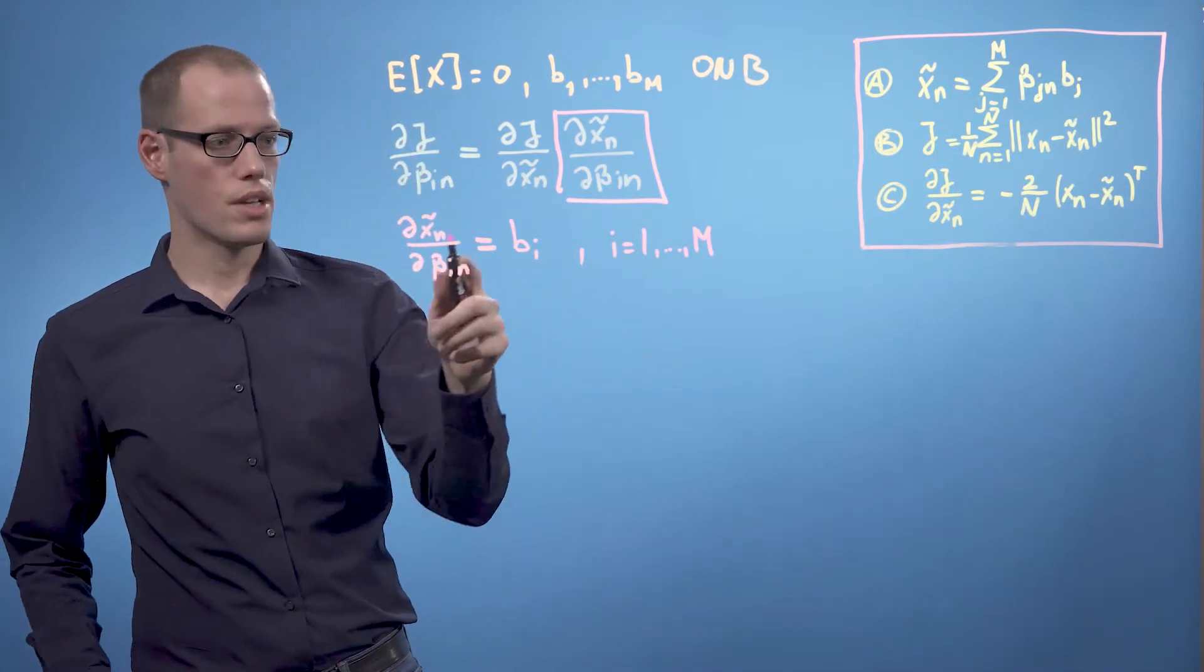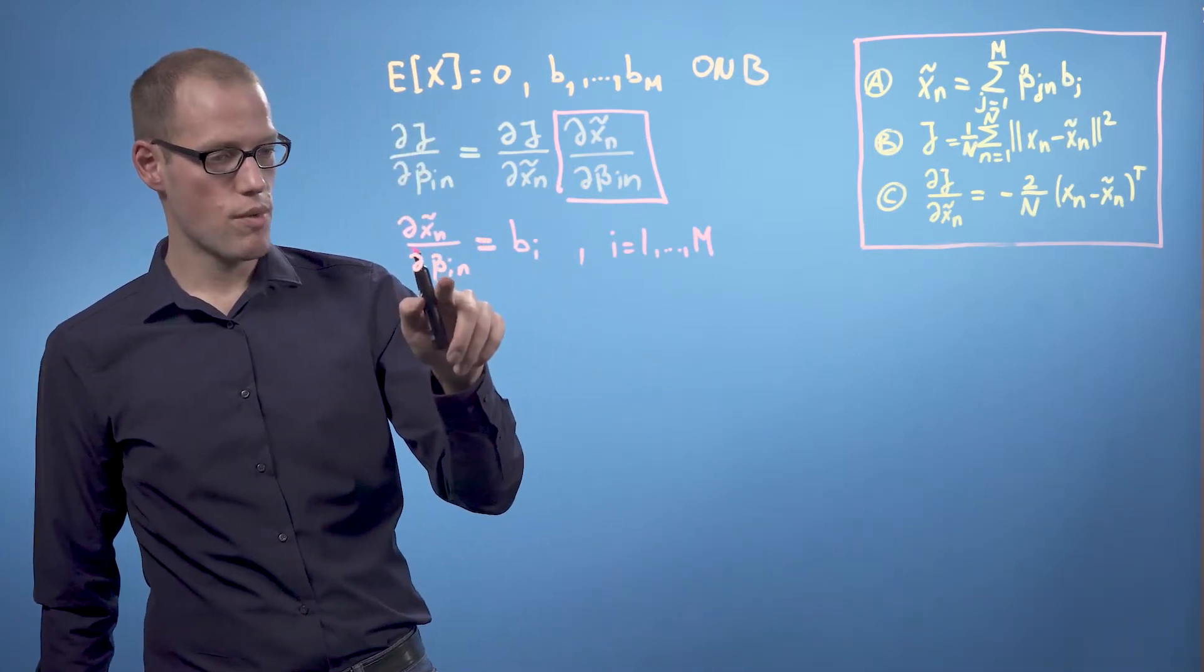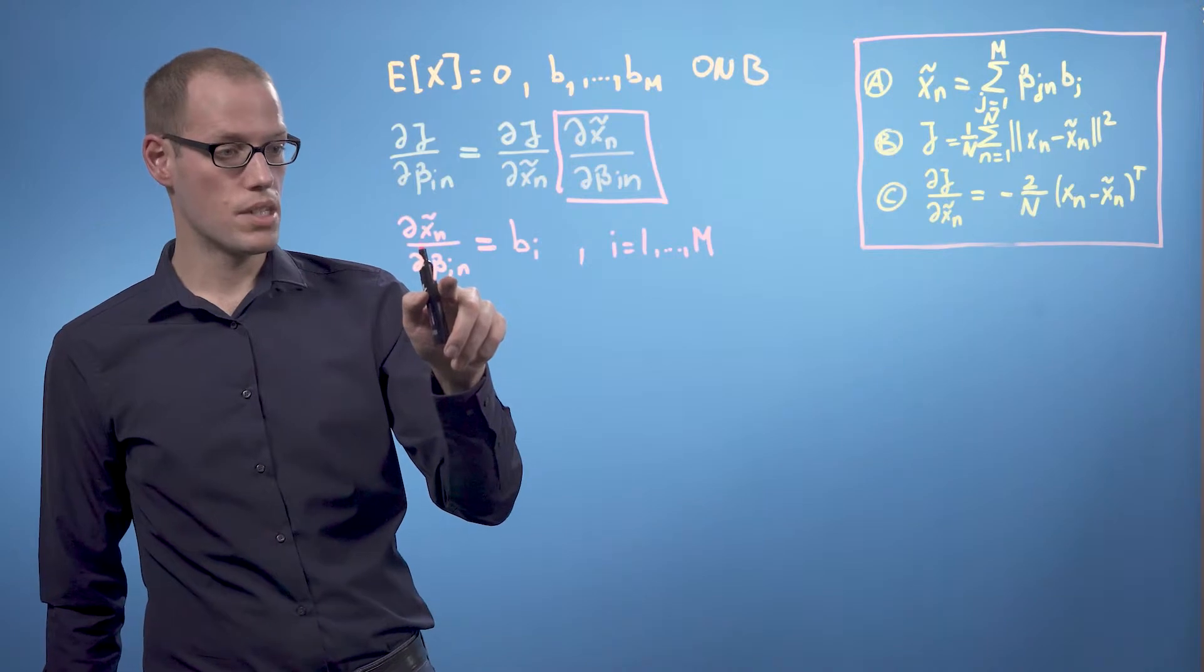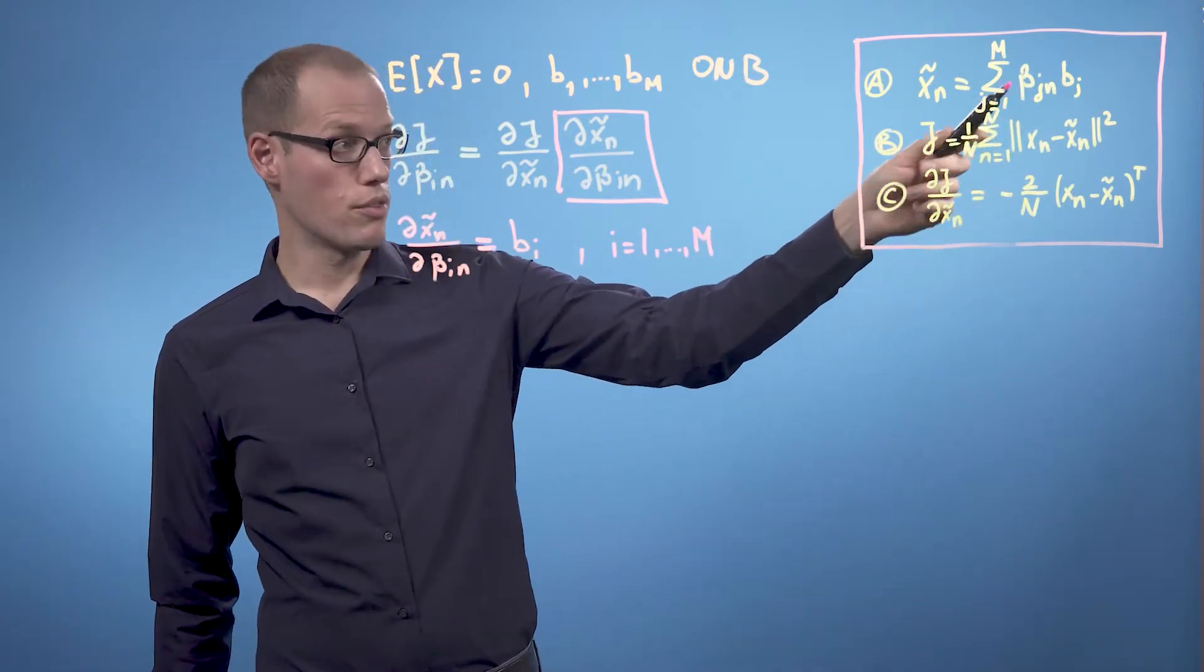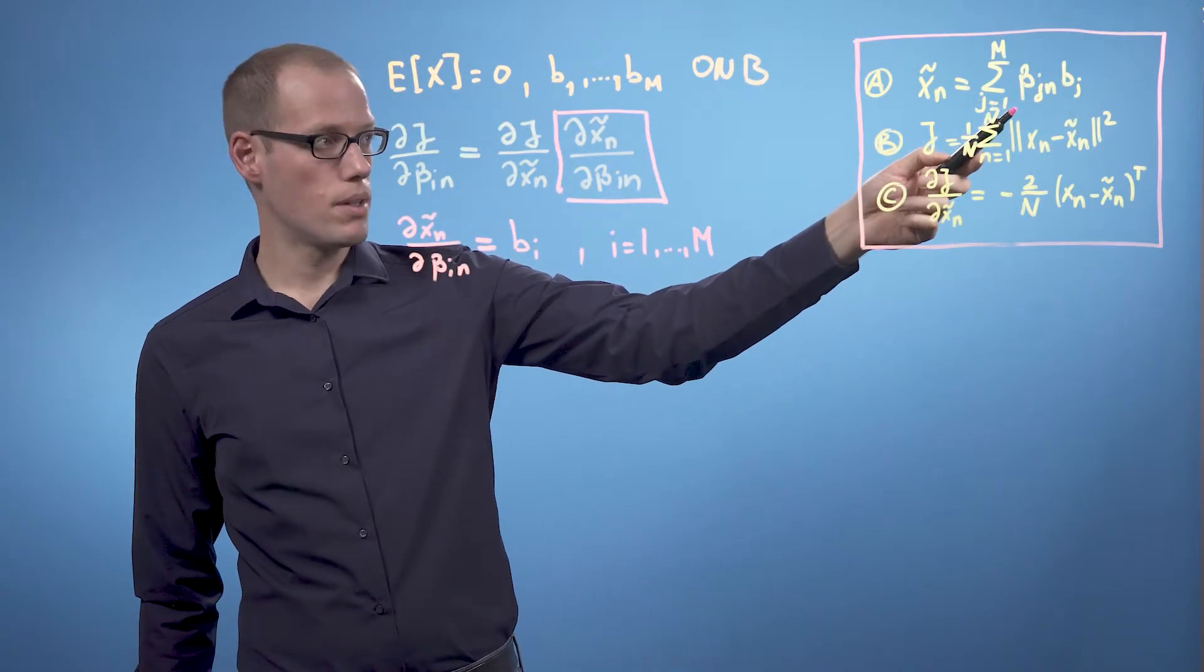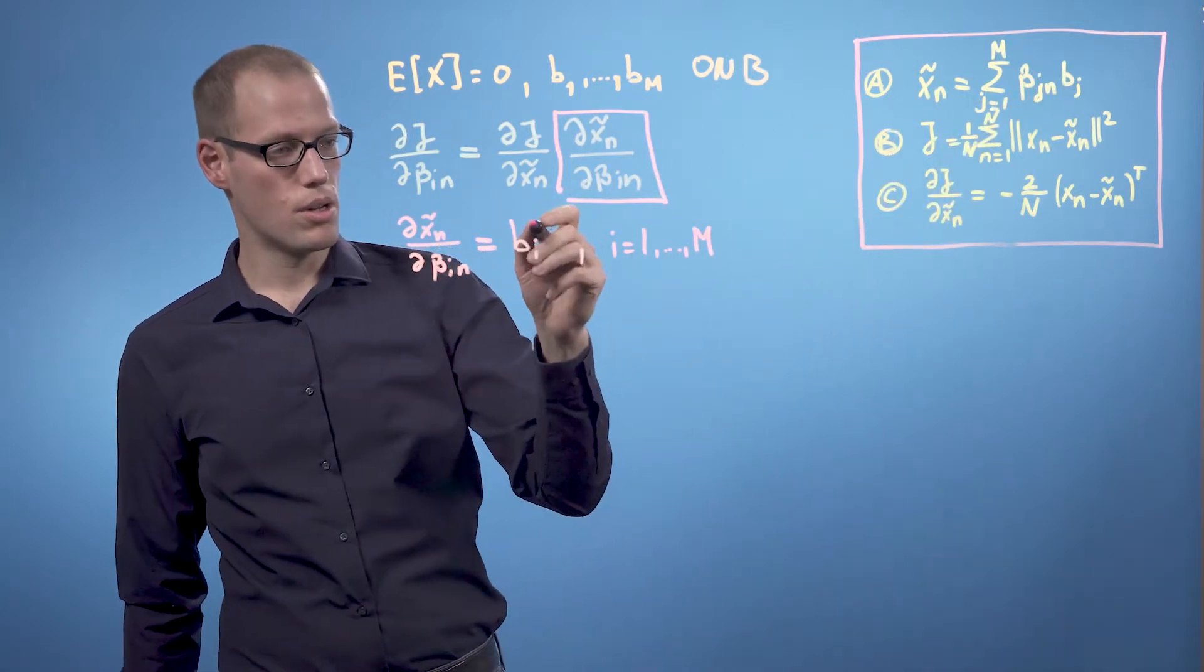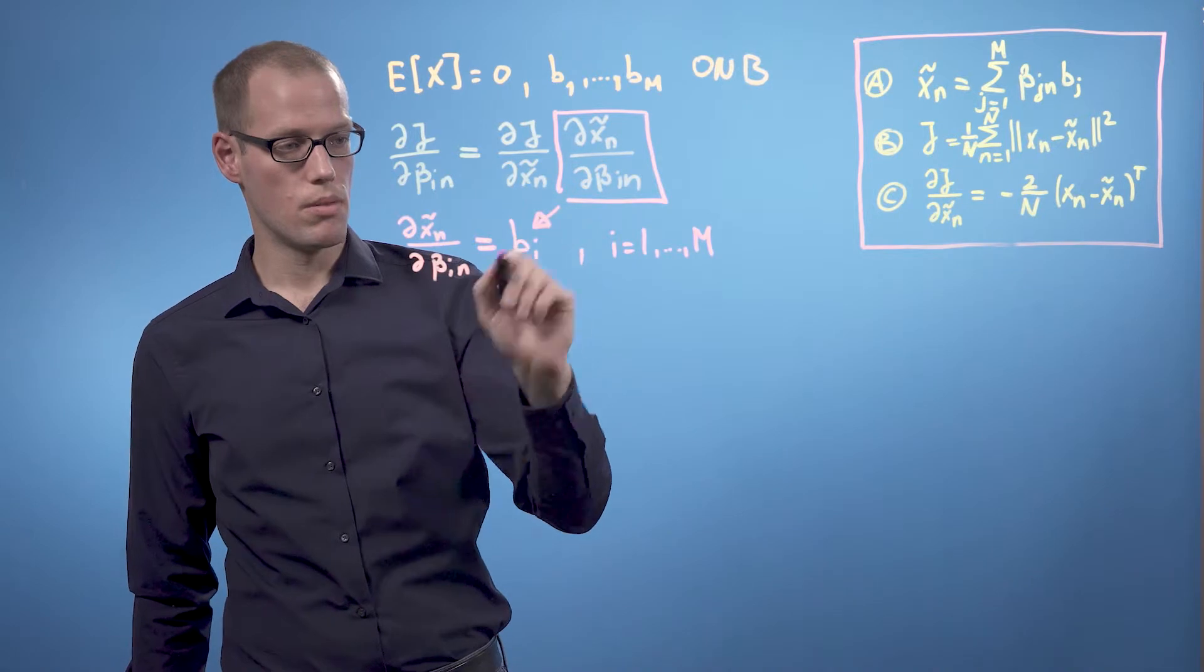And the reason for this is that if we take the derivative with respect to one fixed beta in, then only the i-th component of this sum will play a role. And that's the reason why we end up simply with bi.